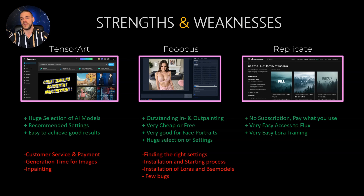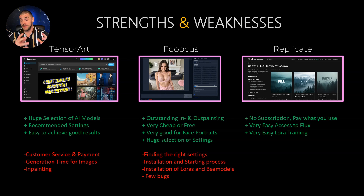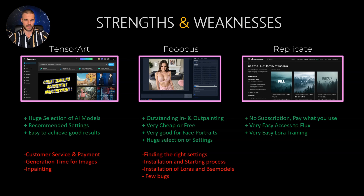The training of LORAs is also very easy in Replicate. If you don't know what a LoRA is, it's basically your own customized AI model which gives you the results you train it on. For example, you could train a LoRA on your own AI influencer to reproduce that influencer again and again. The best part about Replicate is that there is no subscription — you only pay for what you use, paying for every single image.